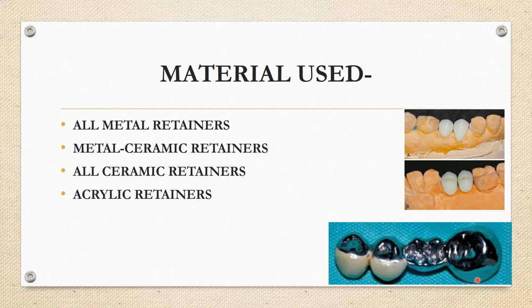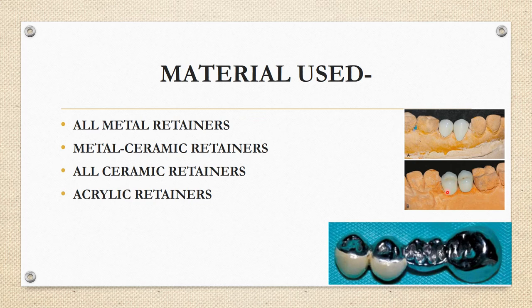Metal ceramic is the most commonly used type, indicated in both anterior and posterior regions. The inner or lingual portion is made up of metal, while ceramic is placed on the buccal and labial surfaces so aesthetics are not compromised. The ceramic can be either a facing or full coverage. For example, in a full coverage metal ceramic, the facing is metal covered by ceramic all over. They require more tooth preparation compared to all metal retainers.